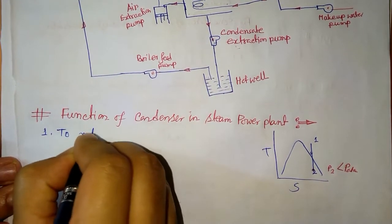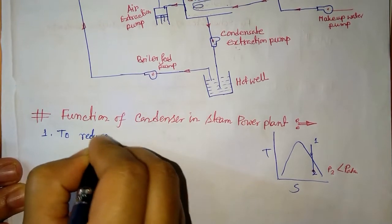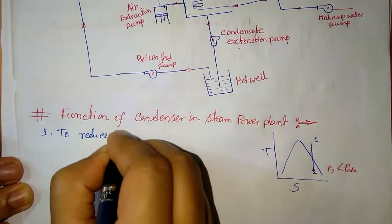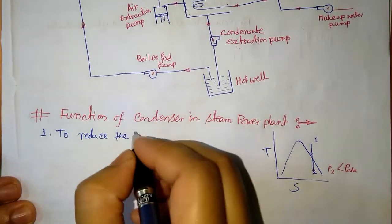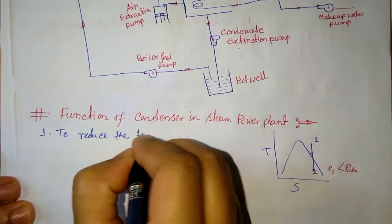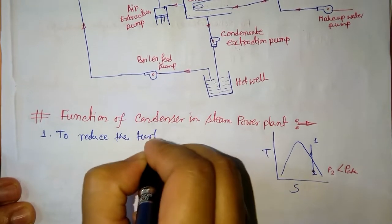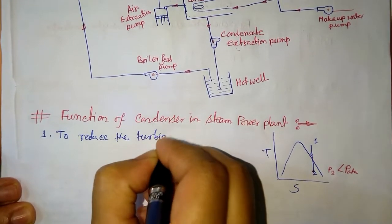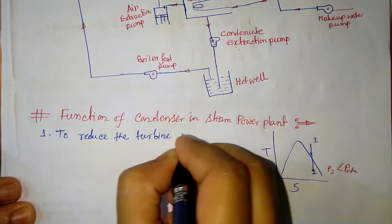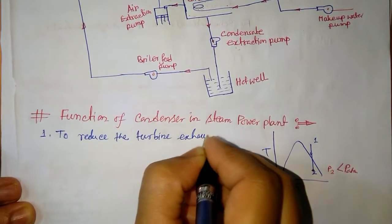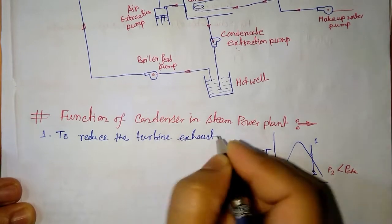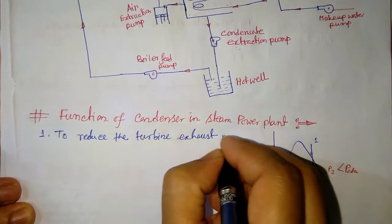So the first function of the condenser is to reduce the turbine exhaust pressure.